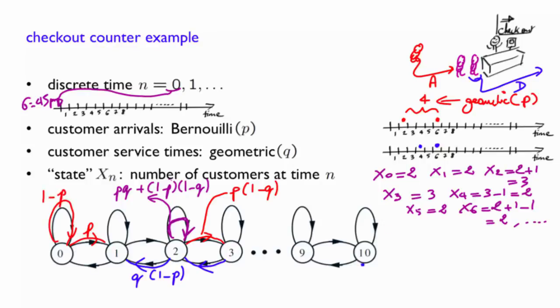And if the queue is at maximum capacity, either you stay at maximum capacity if there is no service, or you go down to nine customers in the queue if you have a departure.